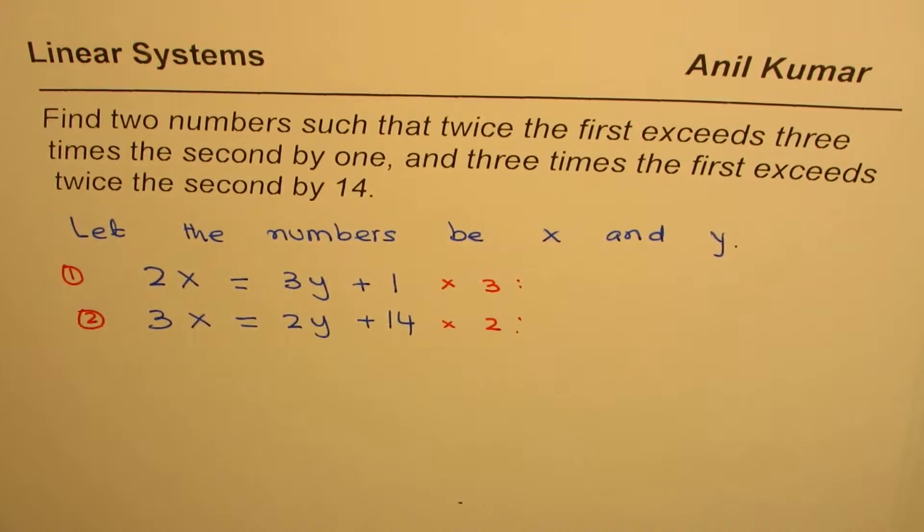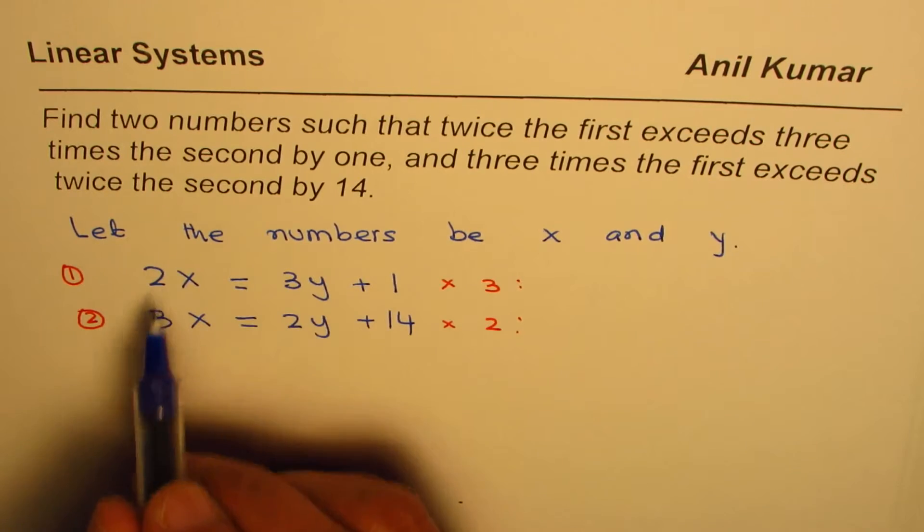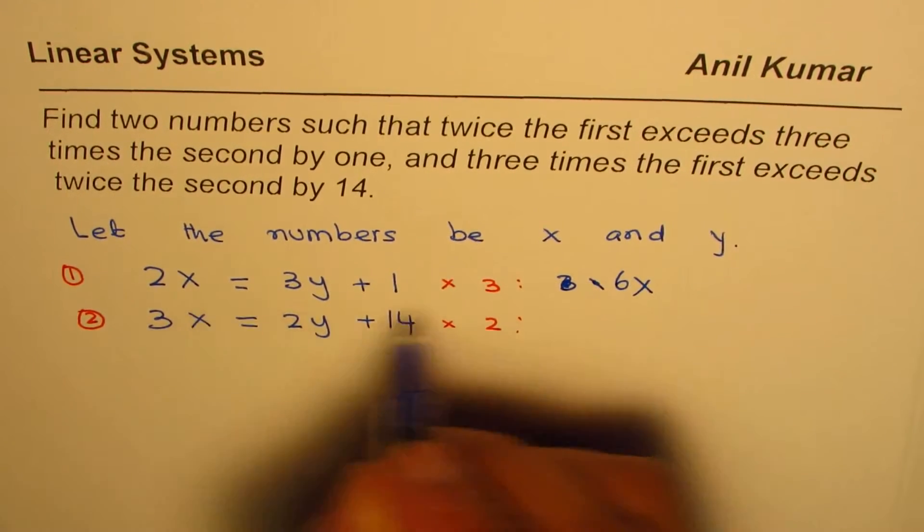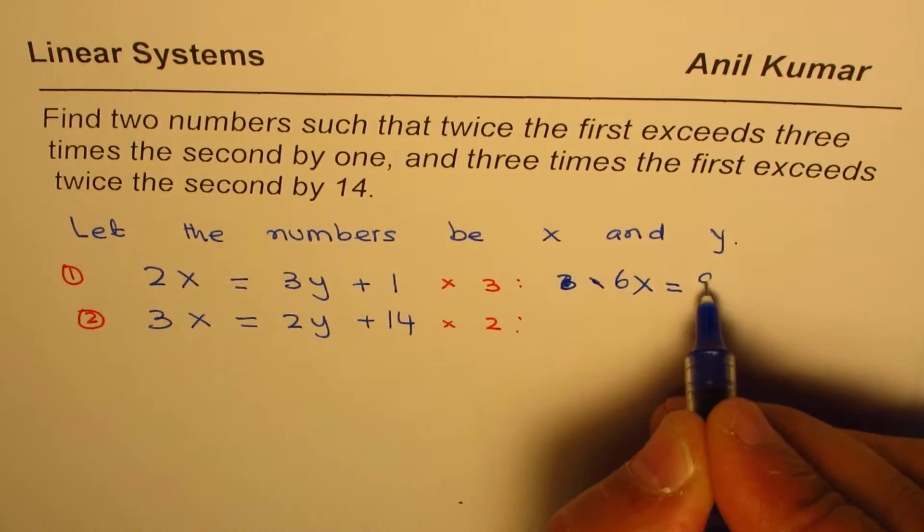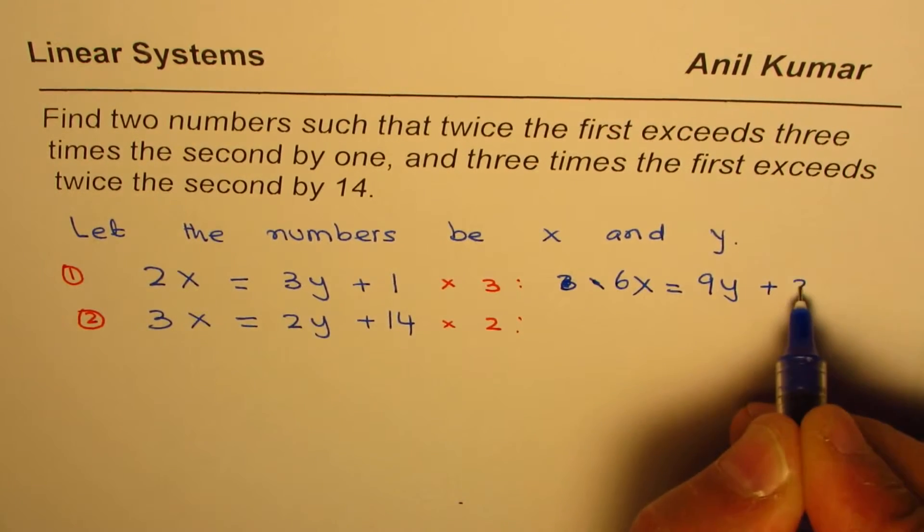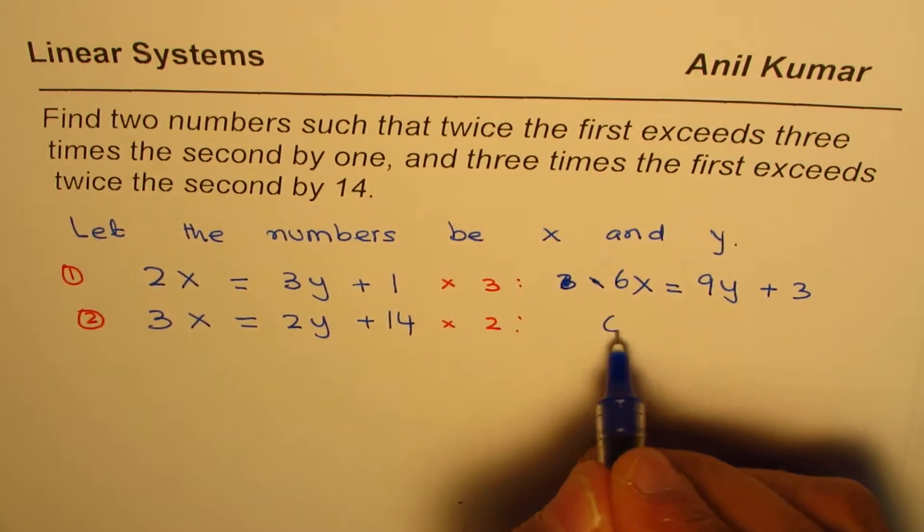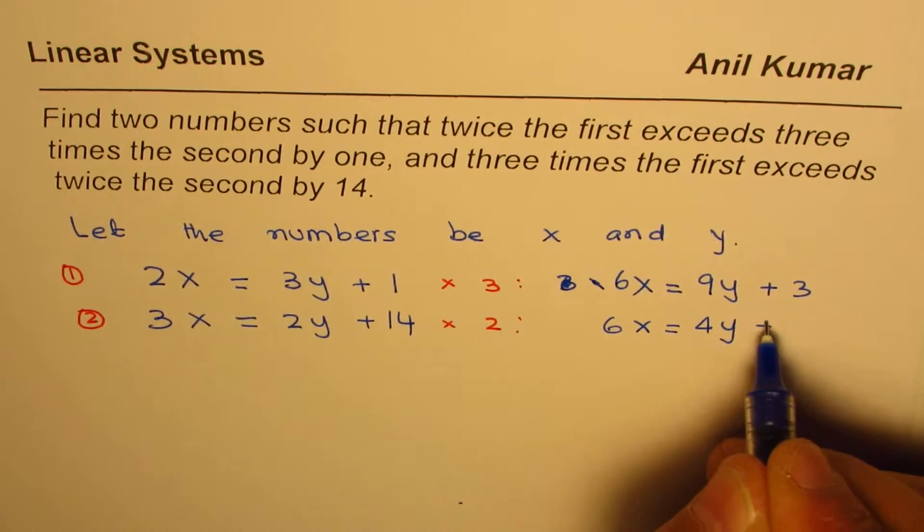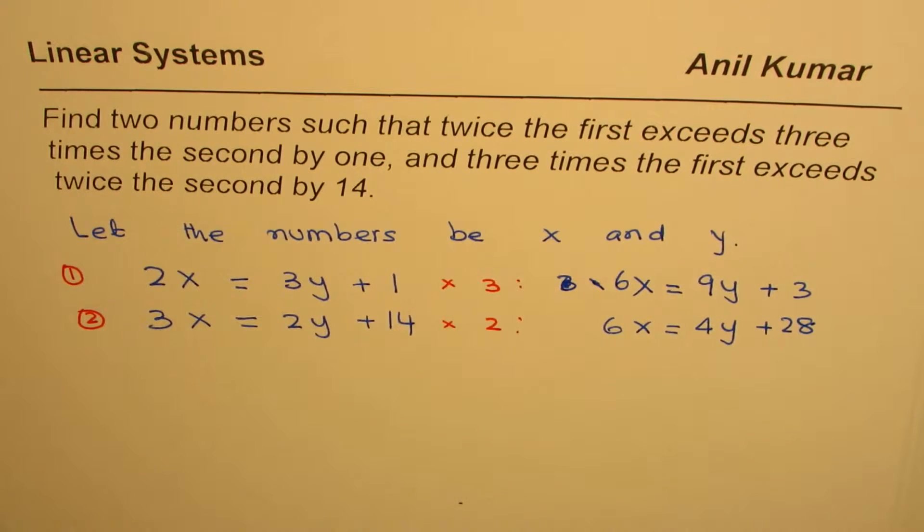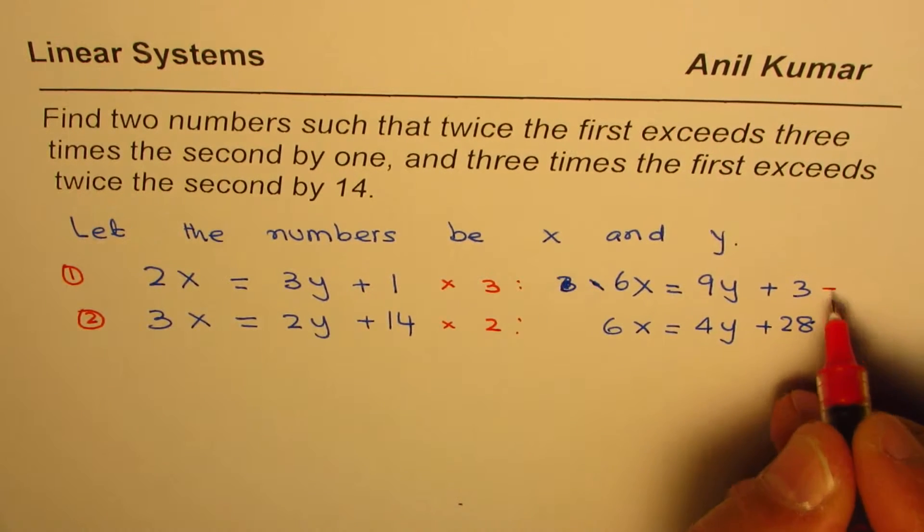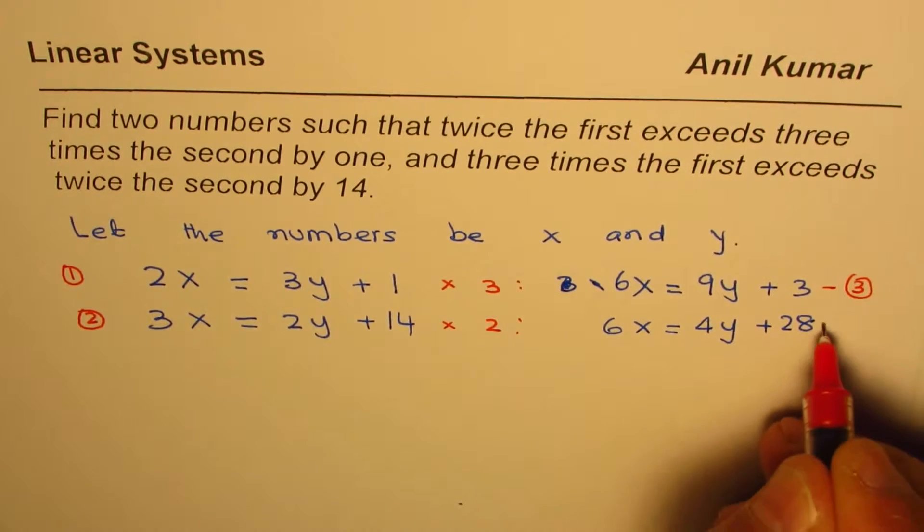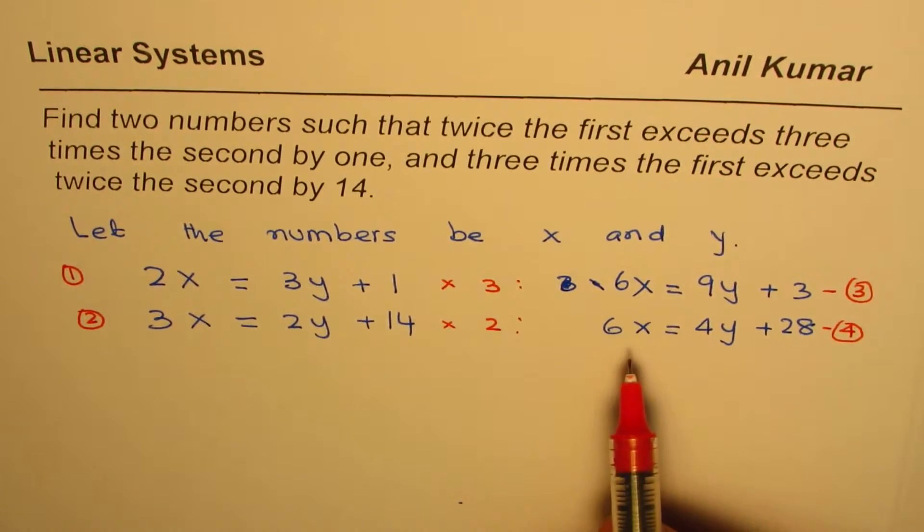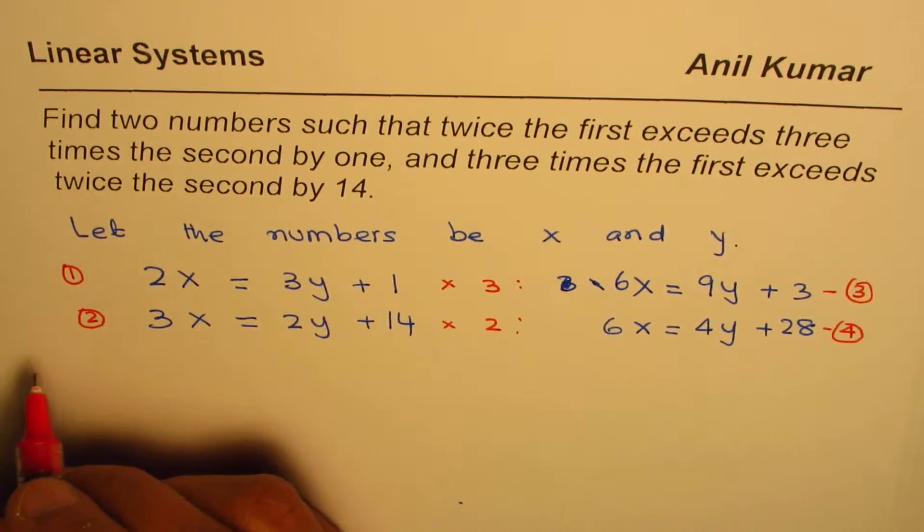Times 2 gives us 6x = 4y + 28. We get two other equations—let's call them equation 3 and 4. From these equations we can eliminate the x terms. We'll do equation 3 minus equation 4 to eliminate x.